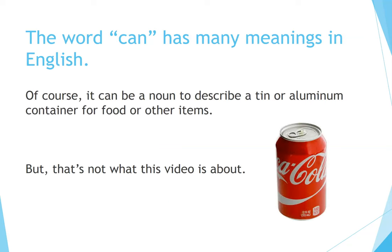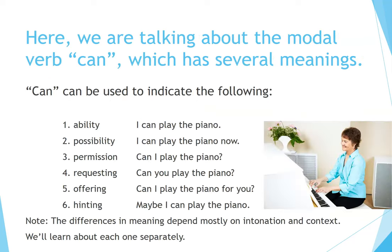The word CAN has many meanings in English. Of course, it can be used as a noun to describe a tin or aluminum container for food or other items. But that's not what this video is about. Here we're talking about the modal verb CAN, which has several meanings. CAN can be used to indicate the following.